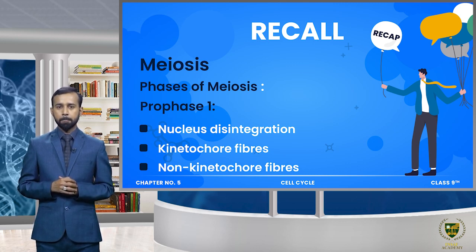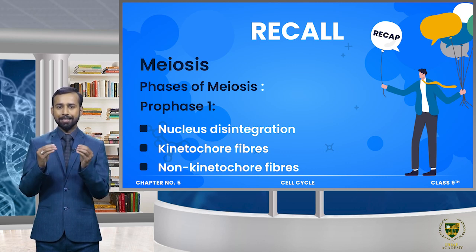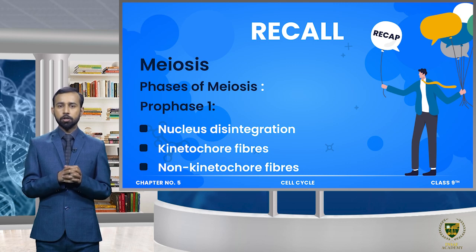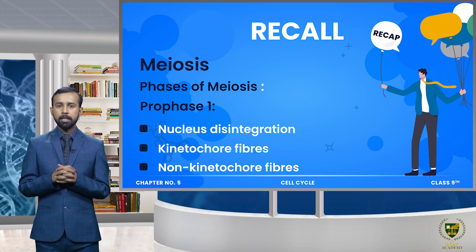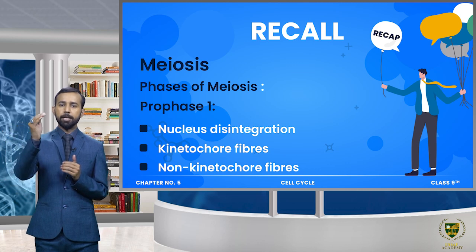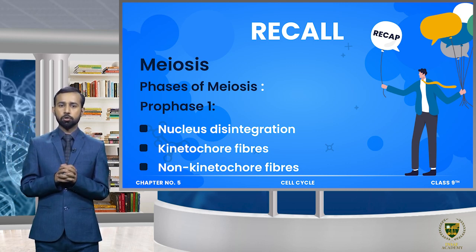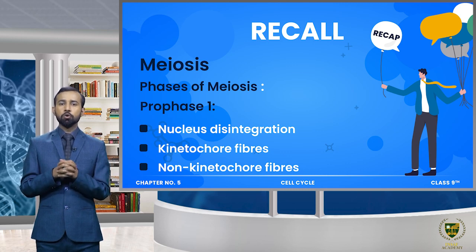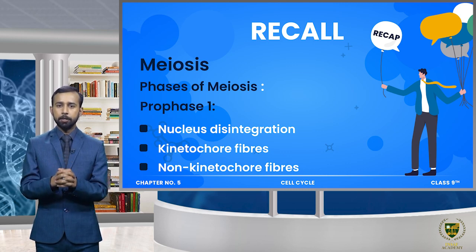Spindle fibers جو ہیں chromosome کے kinetochore کے ساتھ آکے attach ہوتے ہیں۔ اب spindle fibers اور kinetochore کی attachment میں ایک difference ہے mitosis اور meiosis میں۔ Mitosis میں ایک ہی chromosome کی دونوں side پہ spindle fibers attach ہوتے ہیں۔ لیکن چونکہ meiosis میں center میں two chromosomes present ہیں تو ایک chromosome کی صرف ایک ہی side پہ spindle fiber attach ہوگا - ایک side والا spindle fiber ایک chromosome کے kinetochore کے ساتھ اور دوسری side سے جو spindle fiber ہے وہ دوسرے chromosome کے kinetochore کے ساتھ attach ہوگا۔ ان کو ہم کہتے ہیں kinetochore fibers۔